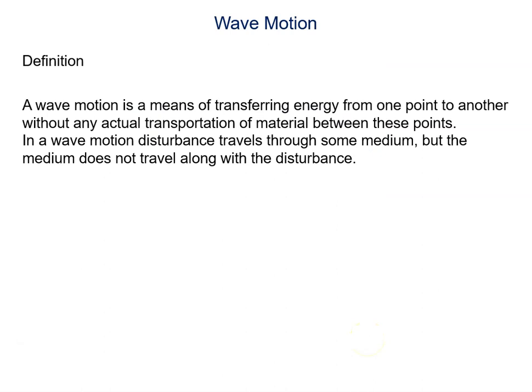So we can say a wave motion is a transfer of energy from one point to another point without any actual transportation of material between these points. In a wave motion, disturbance travels through some medium but the medium does not travel along the disturbance.